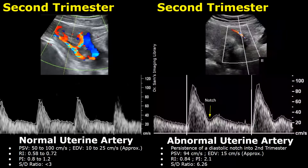This is an abnormal uterine artery spectral Doppler waveform in the second trimester. There is persistence of a diastolic notch into the second trimester — we can see this groove right here. This may indicate an abnormality, but the resistive index, pulsatility index, and SD ratio are more reliable parameters which may indicate an abnormality.